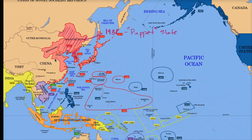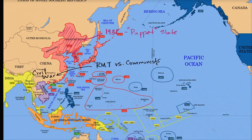We need to remember what is happening in China in the 1930s. China is embroiled in a civil war between the nationalists — the Kuomintang, led by General Chiang Kai-shek — and the communists, led by Mao Zedong. Imperial Japan is taking advantage of this civil war to take more and more control over parts of China.